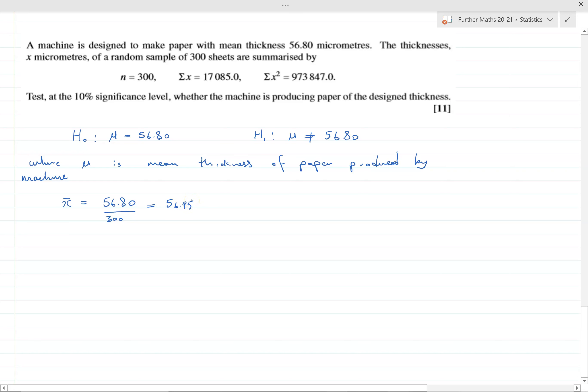For the standard deviation or variance, we need to use the n minus 1 formula because it's a sample, because it's an unbiased estimator. It doesn't make much difference to the number but they expect you to understand that because we're dealing with a sample we must use the n minus 1 formula.